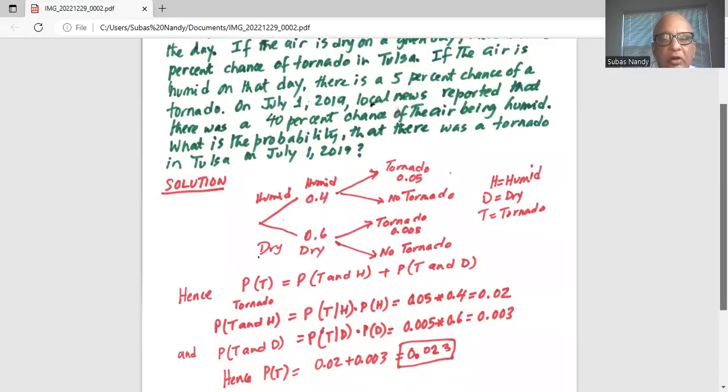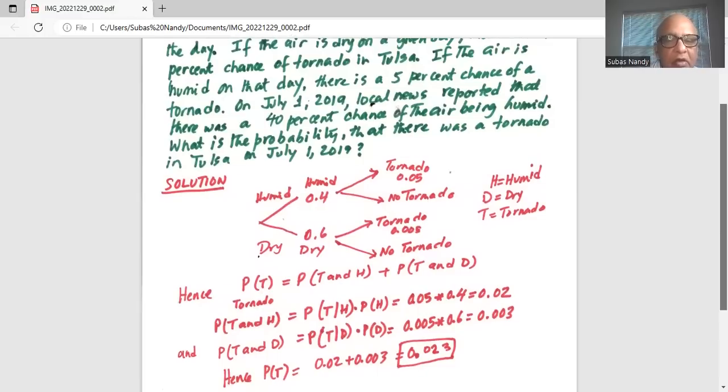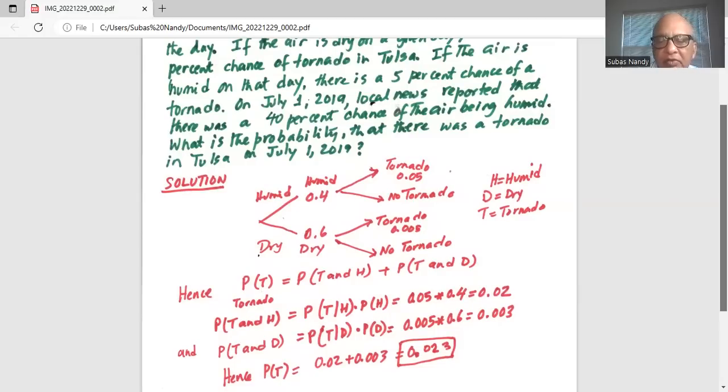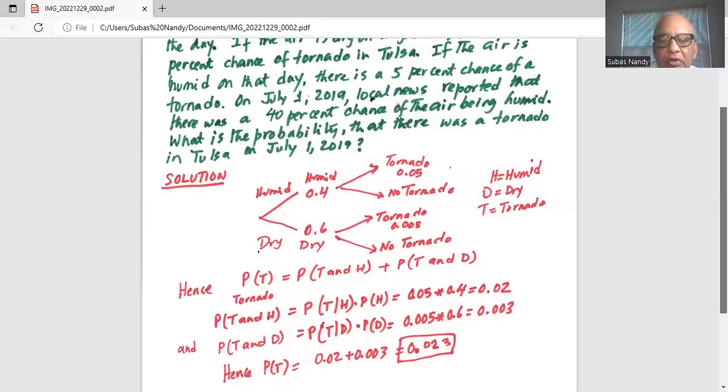Similarly, probability of tornado and dry is probability of tornado given the day is dry, which is 0.5% or 0.005, multiplied by probability of dry. So this is equal to 0.005 times 0.6, which is the probability of dry, and that equals 0.003.